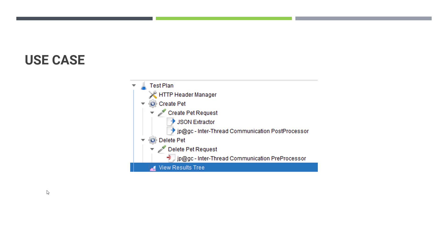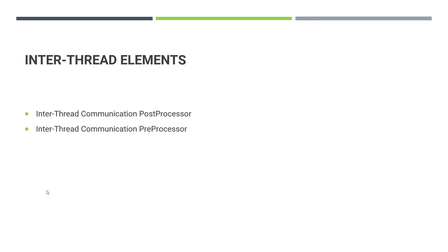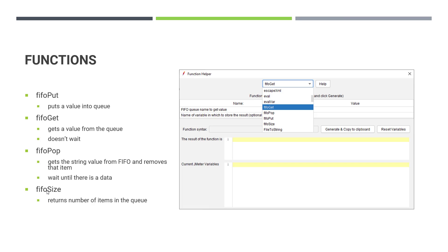How do we leverage these inter-thread elements? There are two ways. One is using the elements — right-click on a sampler, go to Add, and add either a post-processor or pre-processor, just like any typical JMeter element. Only these two element types are available. If you're not comfortable using elements, you can leverage functions instead.